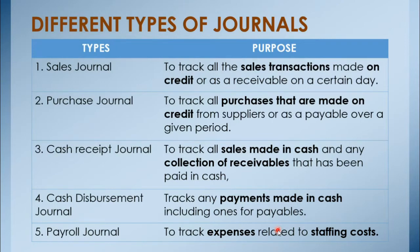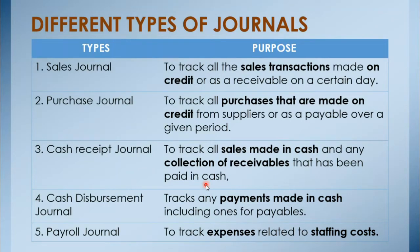The second special journal is the purchase journal, used to track all purchases made on credit from suppliers or as a payable — recording all debts of the business related to buying merchandise or materials. The third is the cash receipt journal, used to track all sales made in cash and any collection of receivables paid in cash. The fourth is the cash disbursement journal, which records all transactions related to cash paid by the business for its payables.